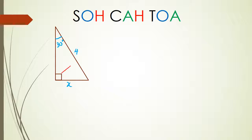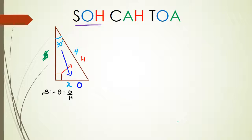The first step is to label your sides. The side opposite the right angle is hypotenuse, the side opposite the angle itself is O, and the side next to the angle is adjacent. But in this case the adjacent is not given, nor are we asked to find it, so we're not going to use it. I've got O and H, which means I have to use the sine rule: sine of theta equals opposite over hypotenuse. Substituting, sine 30 equals x over 4, so rearranging: 4 times sine 30 degrees equals x, which gives x equal to 2.